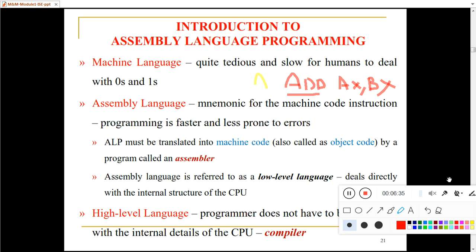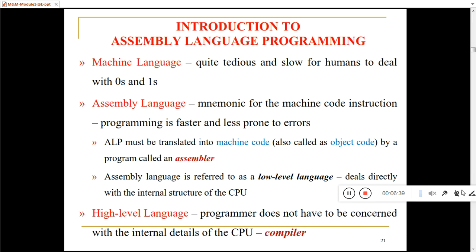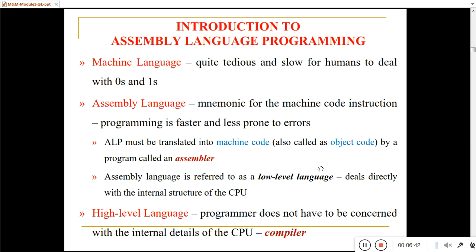Nowadays we write programs in high-level language. In high-level language, the programmer does not have to be concerned with the internal details of the CPU. For example, in assembly language for 8086, you need to know registers like AX, BX, CX, DX, SI, DI, BP, SP, etc. But in high-level language, the programmer is not bothered about which processor is being used. The program is written using syntax similar to English — like if, else, while, do-while — and this is called high-level language. Examples include C, .NET, and Java.